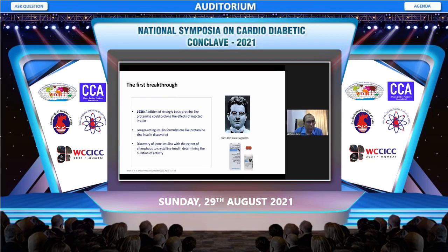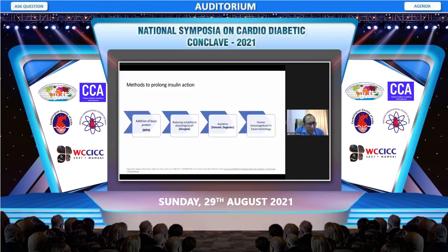The first step was taken in 1936 by protaminating the insulin and producing longer-acting formulations like protamine zinc insulin. Then came the lente insulins, which were very popular at a particular time. Now we have NPH insulin, which came from neutral protamine. From there we moved to the development of first generation analogs like glargine and detemir, and then second generation analogs in the form of degludec and glargine U300.